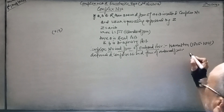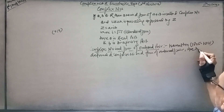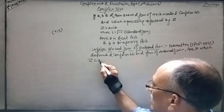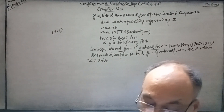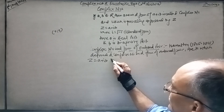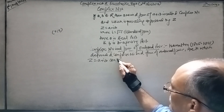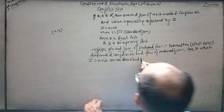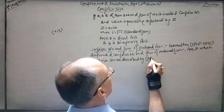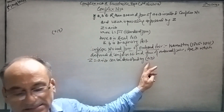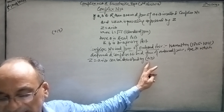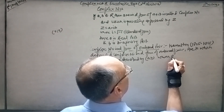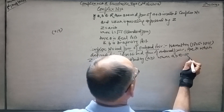According to Hamilton, z equal to a plus ib can be denoted by the ordered pair (a, b), where a and b both belong to R.